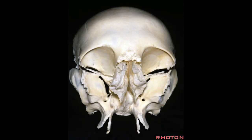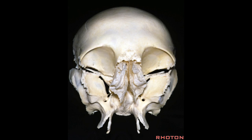The frontal bone forms the upper part of the orbital rim. What bone forms the medial part of the orbital rim and fits right here? The lacrimal bone has been mentioned—any other possibility? What about the nasal bone?